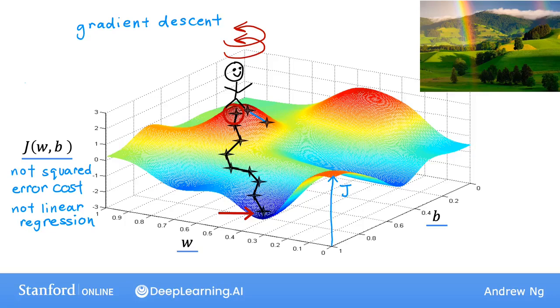If you then repeat the gradient descent process, which means you look around, take a little step in the direction of the steepest descent, so you end up here. Then you again look around, take another step, and so on. And if you were to run gradient descent the second time, starting just a couple steps to the right of where we did it the first time, then you will end up in a totally different valley.